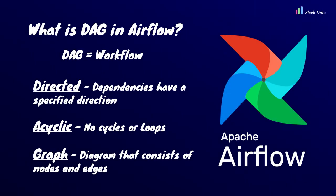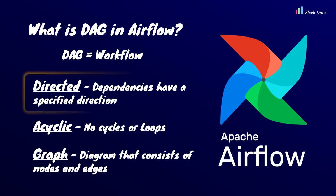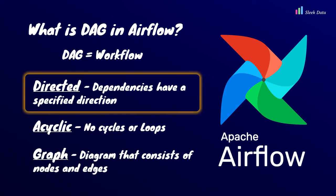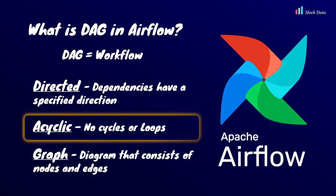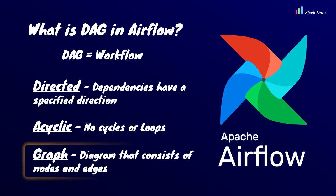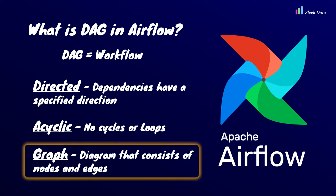When working with Airflow, you'll frequently encounter the term DAG, which stands for Directed Acyclic Graph. A DAG is a fundamental concept in Apache Airflow and serves as a representation of a workflow. Directed refers to the fact that dependencies between the tasks have a specified direction. Acyclic means there are no cycles, so you cannot execute one task and later return back to the same task. A graph is a diagram that consists of nodes and edges, where nodes represent tasks and the edges represent dependencies.